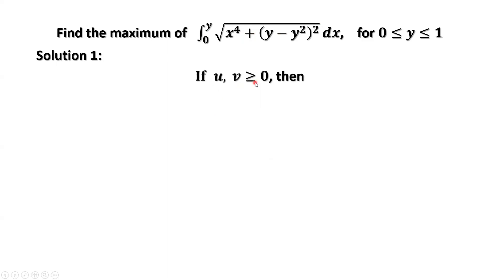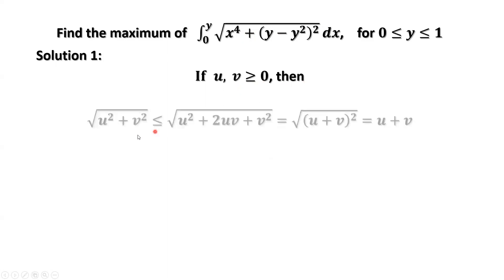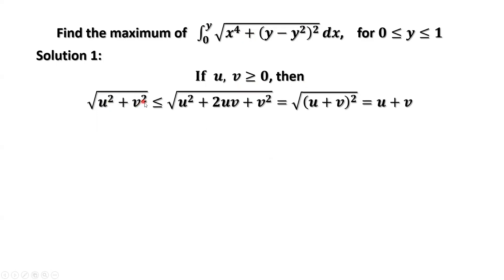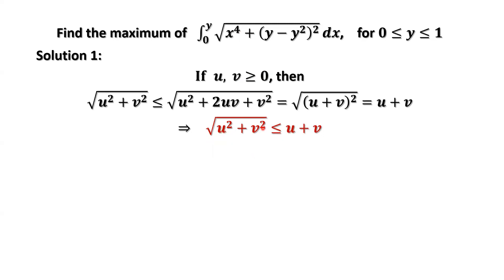If u and v are greater than or equal to 0, then we have √(u² + v²) ≤ √(u² + v² + 2uv). The term 2uv is extra because u and v are ≥ 0, therefore 2uv ≥ 0, which implies this inequality is true. The inside part is a complete square, (u + v)². Taking the square root, we get √(u² + v²) ≤ u + v, when u and v are ≥ 0.